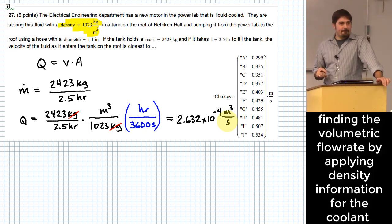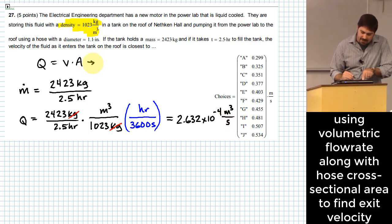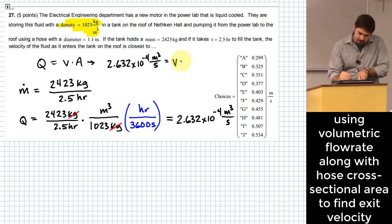All right, well what do I do with that? Well, that's actually most of what I need. This up here I can now write as 2.632 times 10 to the minus 4 cubic meters per second will be equal to the velocity, which I believe that's what we're trying to find, times the area of the hose. And the area of the hose is going to be equal to pi times the diameter of the hose, 1.1 inch squared, over 4.